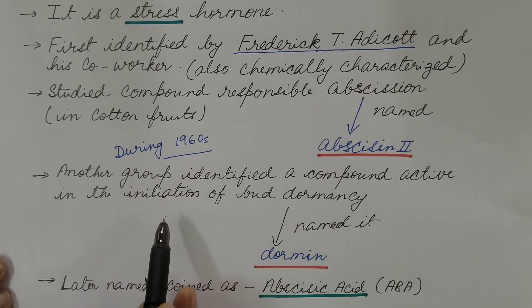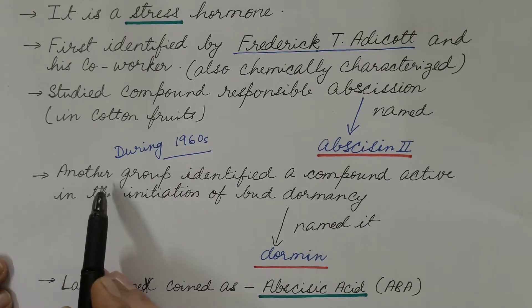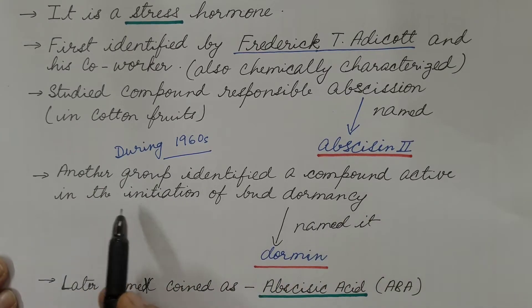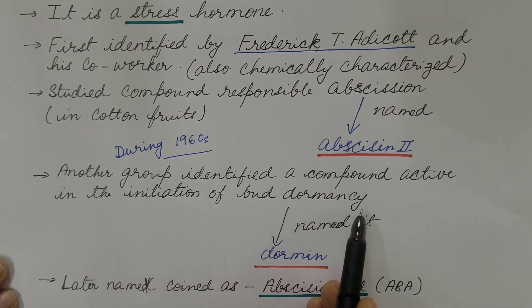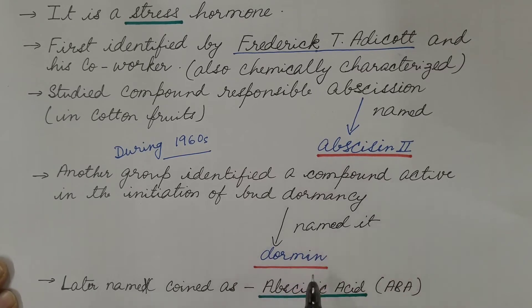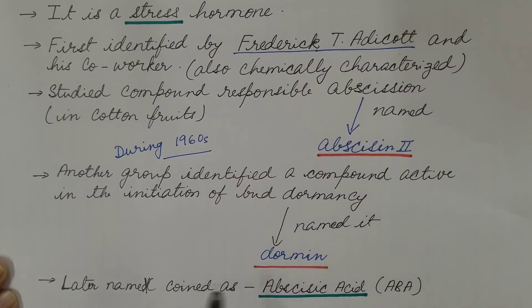During the 1960s, in the same time period, another group identified a compound active in the initiation of bud dormancy and named it dormant. It was found that these two are the same compound. Hence, the name was later coined as abscisic acid, that is ABA.